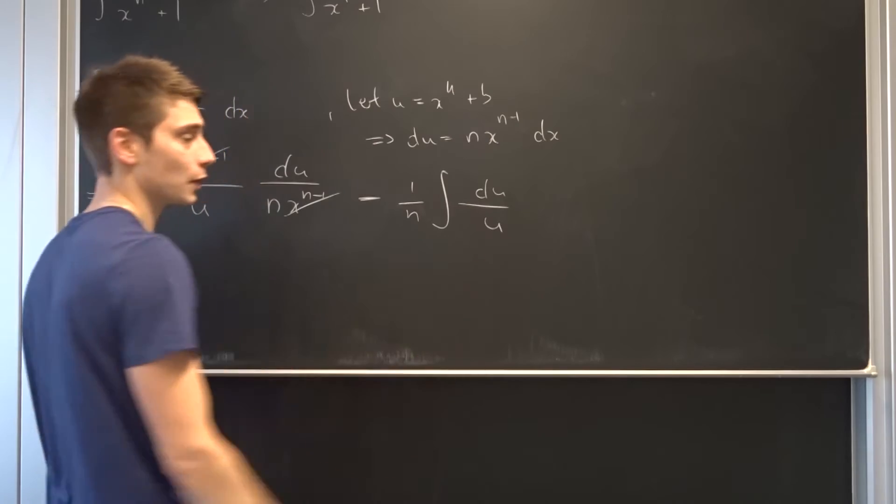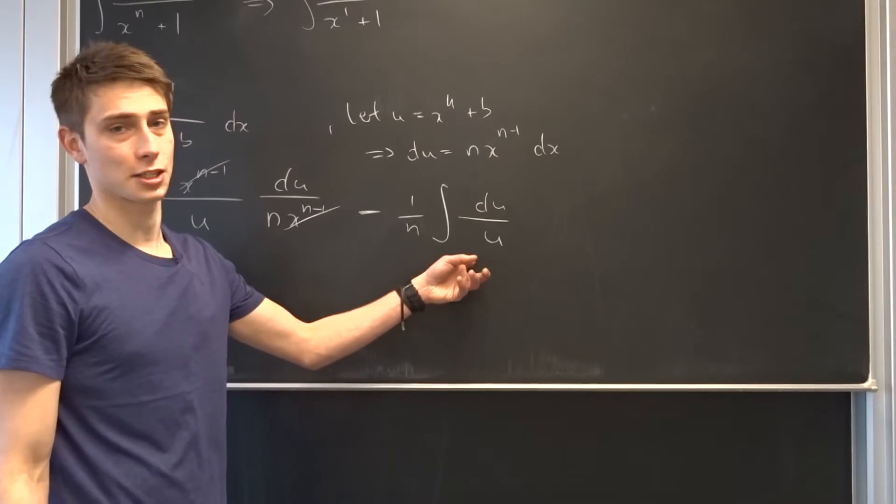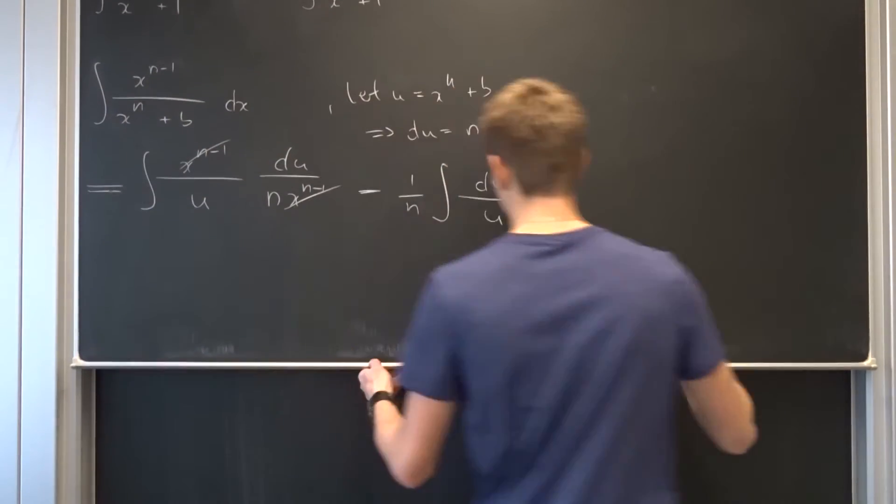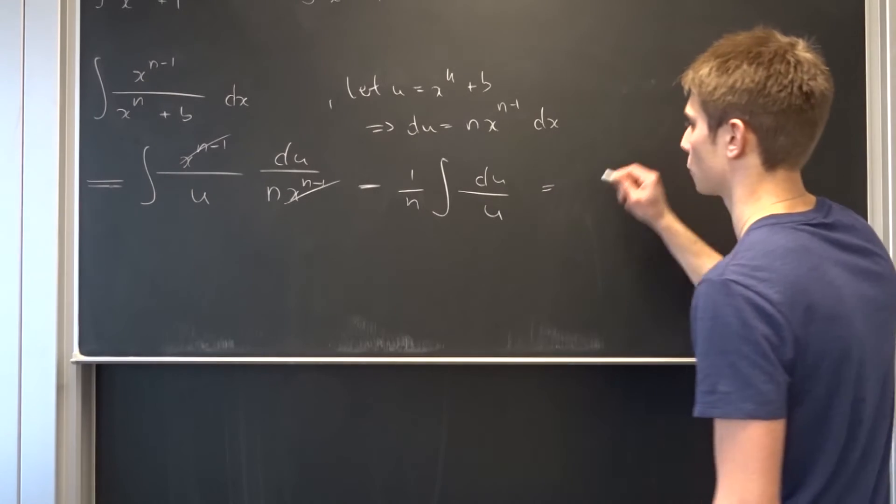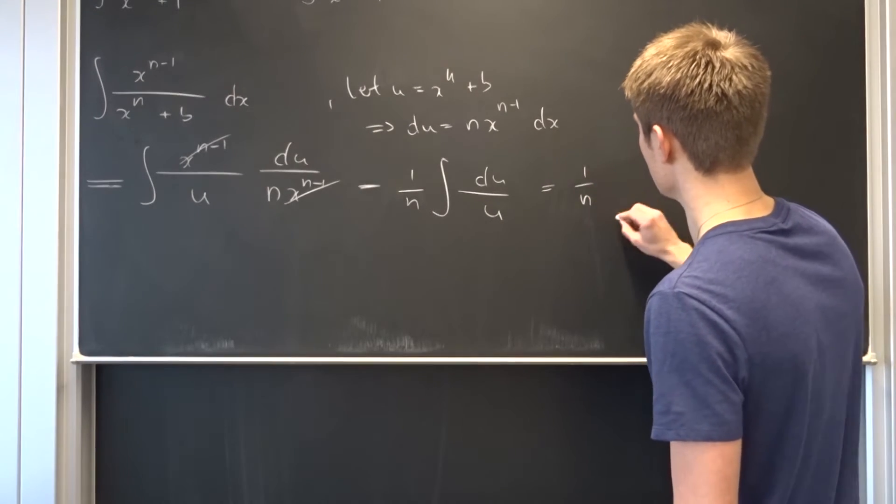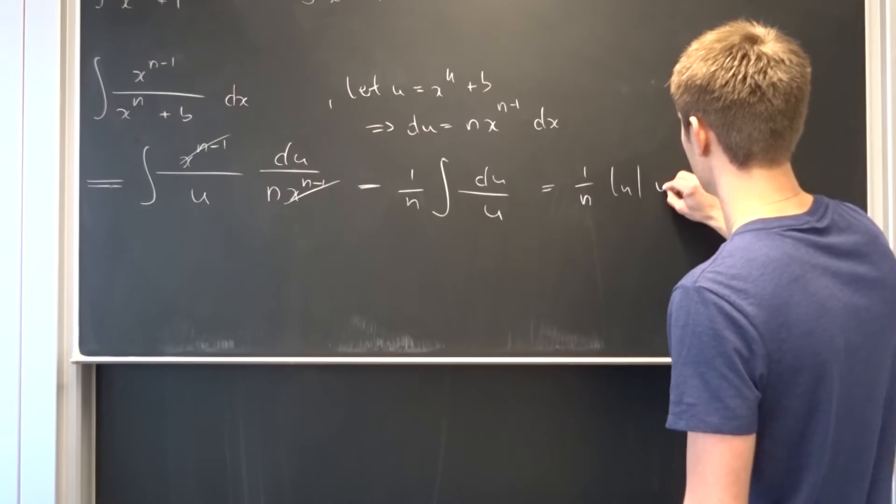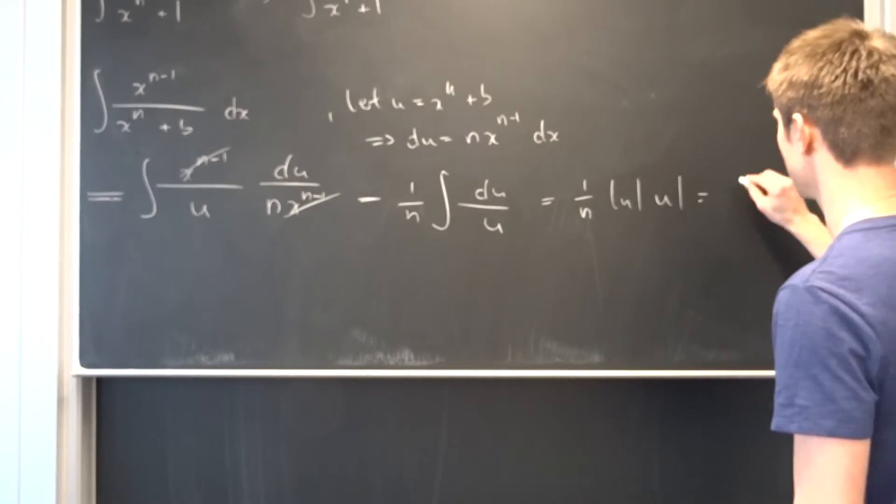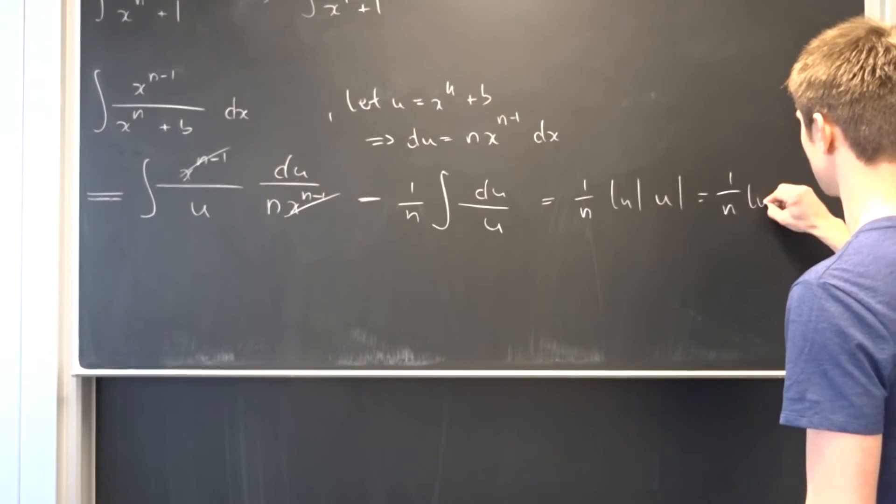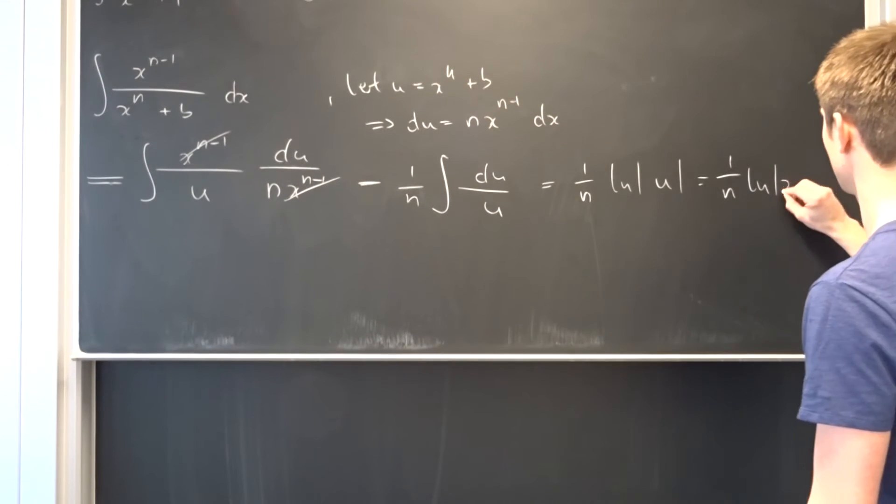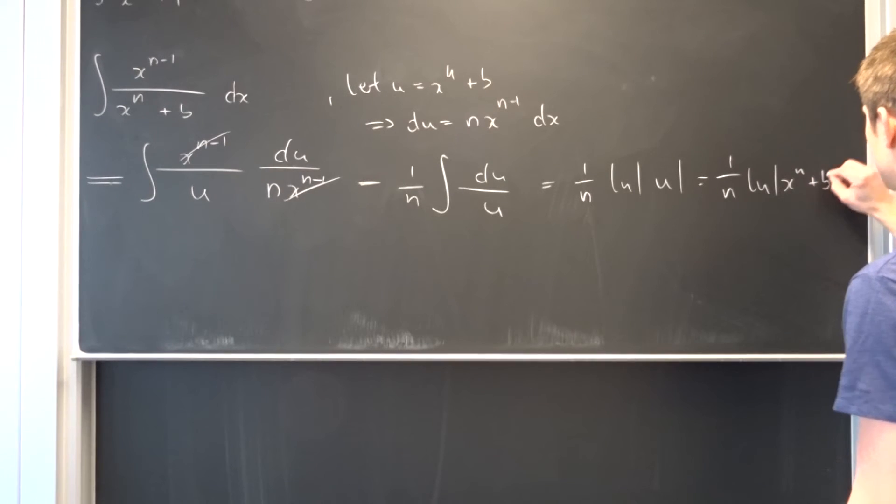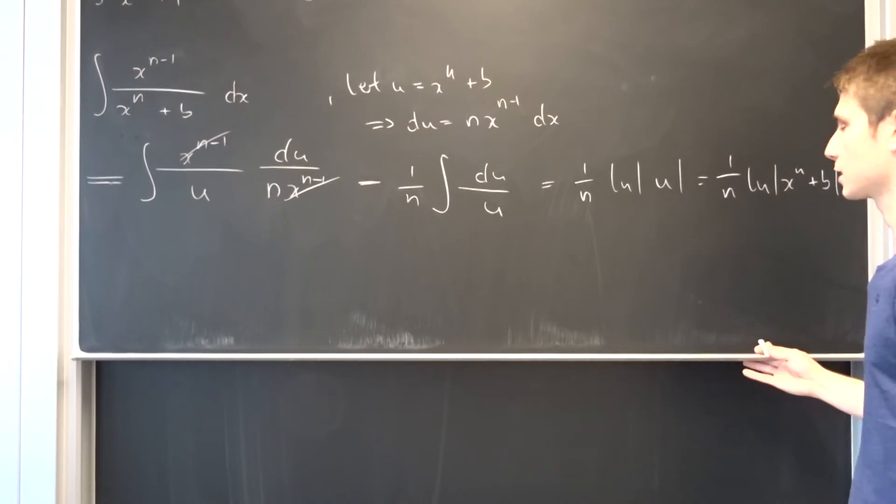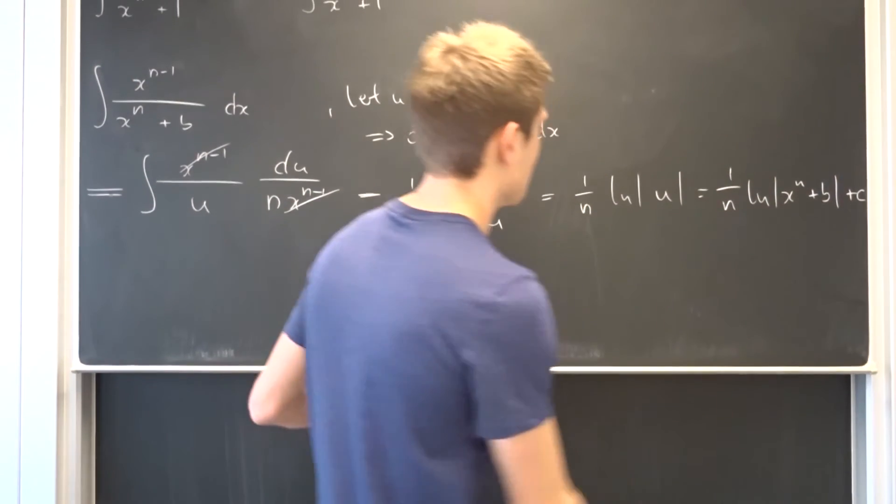And as you might know, this is just the natural log. So in the end, what we've got is 1 over n times the natural log of u plus some c. But we are going to plug our u in first. So that's 1 over n times the natural log of x to the nth power plus B plus some arbitrary constant C, and then we are already done.